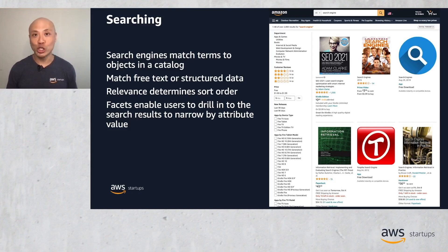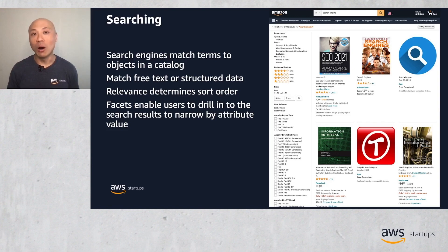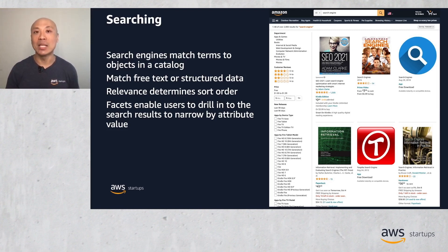Here is a sample view and screenshot of how the service looks when used for real-time search. In this particular example, it is being used as a search engine to match terms to objects in a product catalog. Search terms can match both free text and structured data, and results are returned in sorted order based on relevance. On the left, you can see that facets can be used to drill into the search and narrow results based on attribute values.